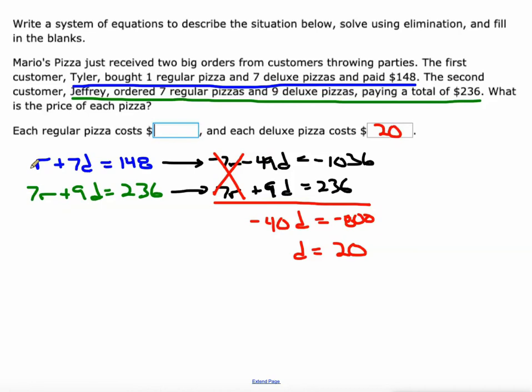I'll plug that $20 in. I'm going to take this equation since it's already got one r, so it'll be easier to solve: r + 7(20) = 148, so r + 140 = 148. Subtract 140 from both sides and we see that a regular pizza costs $8. So $8 for a regular and $20 for a deluxe.